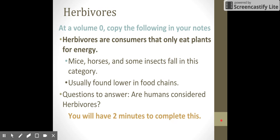Now things that only eat plants are known as herbivores. So mice, horses, some insects, they fall under this category of things that only eat plants. Herbivores, herb standing for plants, vores meaning eating. And they're usually found lower in the food chain, usually right above where the producers are. So the question here is, are humans considered herbivores? We're going to learn more about how to answer that question in just a bit.